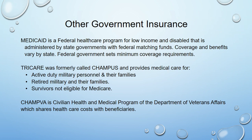There are some other government insurance agencies. There's Medicaid, which is a federal health insurance program for low-income and disabled patients, administered by state governments with federal matching funds. Coverage varies state by state, but there are federal minimum requirements for health care. TRICARE, which used to be called CHAMPUS, provides medical care for active-duty military and their families, retired military and their families, and survivors not yet eligible for Medicare. And then there's CHAMPVA, a civilian health care program for veteran affairs which shares health care costs with the beneficiaries.